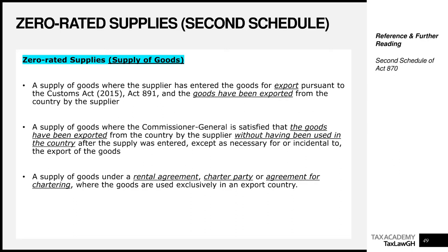Once you have that documentary proof, you can apply a VAT rate of 0% on that supply. This also applies to goods actually exported from Ghana that were not used in Ghana after you entered them for export. The whole idea is goods that you have exported — actually exported — with documentary proof showing the goods have left the shores of Ghana.